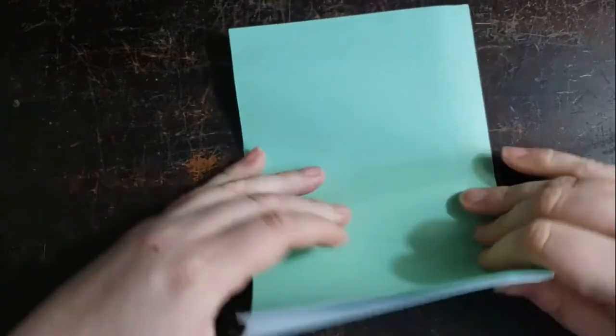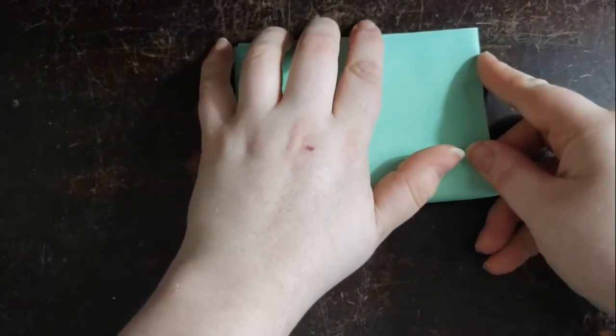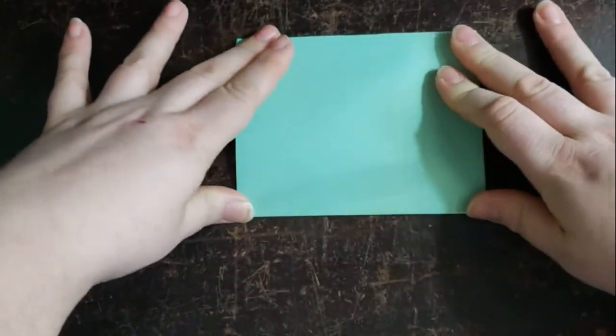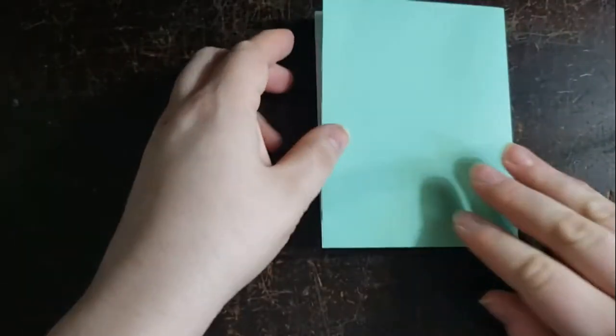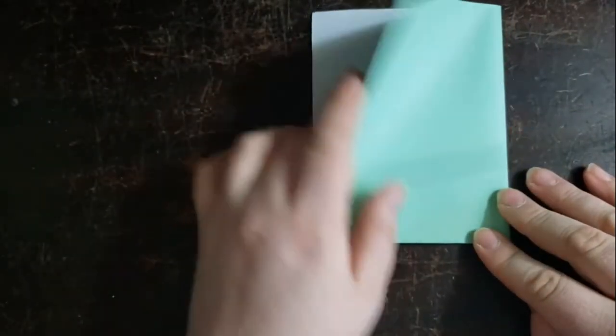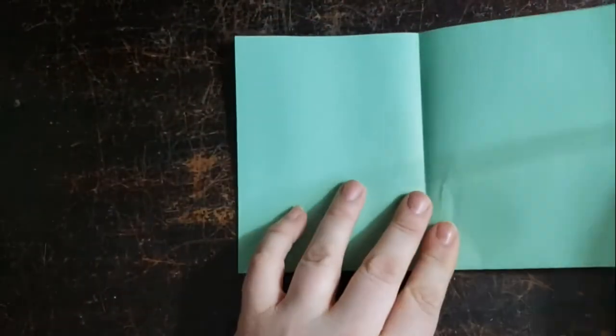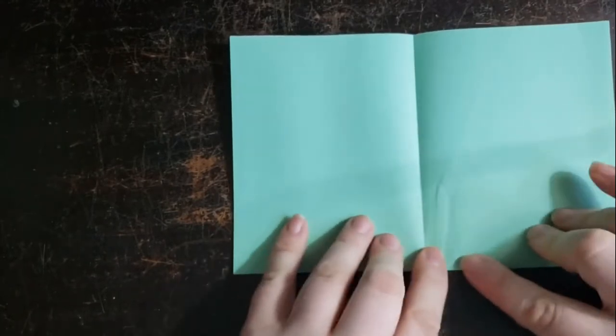I'm going to turn it this way so you have the open part up here. Open it up. Then using this bottom crease as a guide, you're going to fold the edge into the center using that crease you just made.